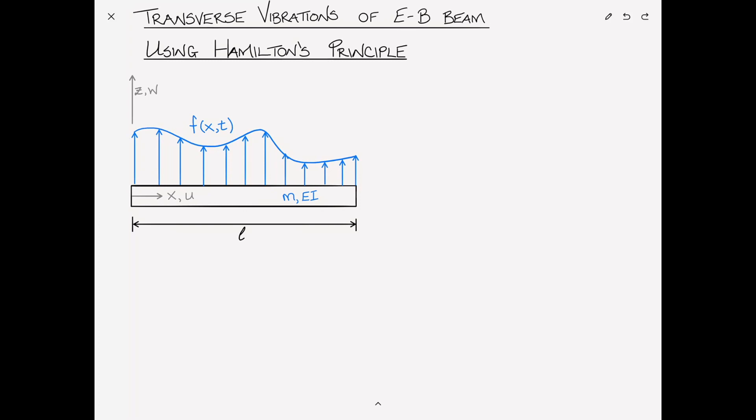In the previous video, we determined that the kinetic energy for an Euler-Bernoulli beam could be written as the integral from 0 to L of one-half M W-dot squared dx. This is the translational kinetic energy, and we also explained that for an Euler-Bernoulli beam the rotational kinetic energy is negligible and can be ignored.